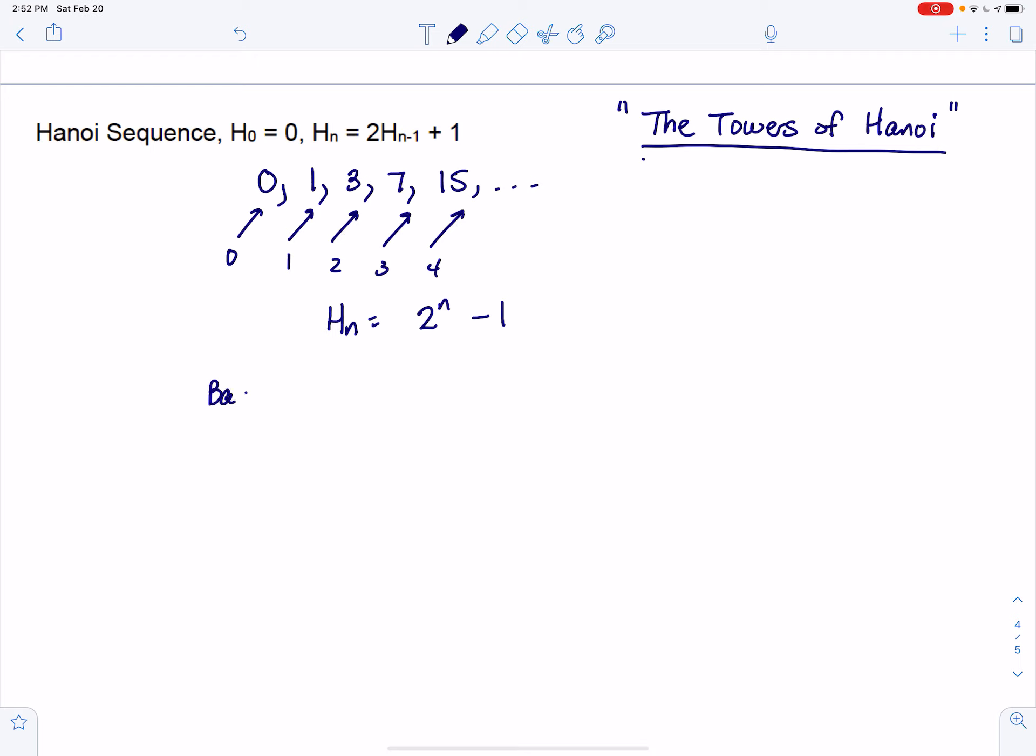So base case, we'll say n equals 1. H sub 1 is equal to 2 to the first minus 1, which is 1. And we've already computed H sub 1 up there is 1, so that meets the base case.